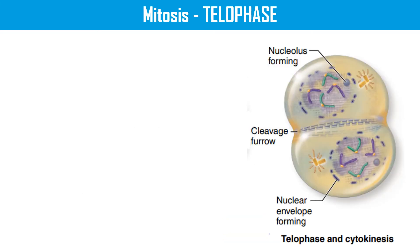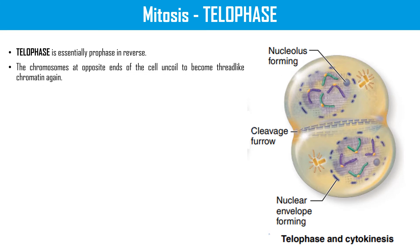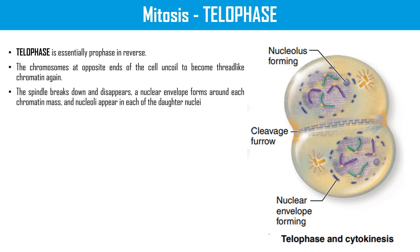Then we have telophase. Telophase is essentially prophase in reverse — whatever happens in prophase, you simply reverse it in telophase. Chromosomes at the opposite ends of the cell uncoil to become thread-like chromatin again. The spindle breaks down and disappears. A nuclear envelope forms around each chromatin mass, and nucleoli appear in each of the daughter nuclei.